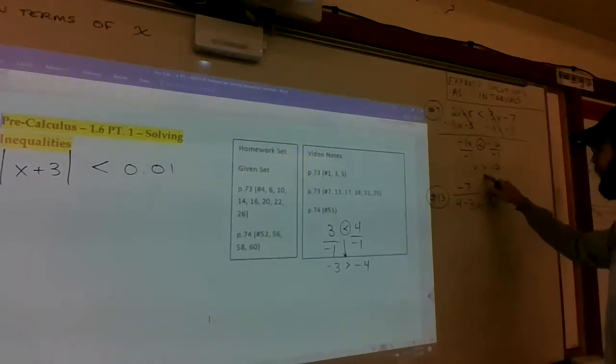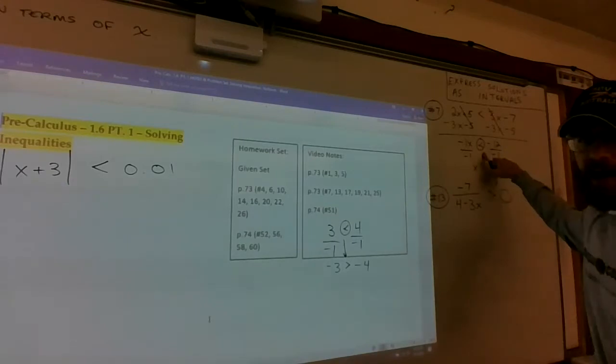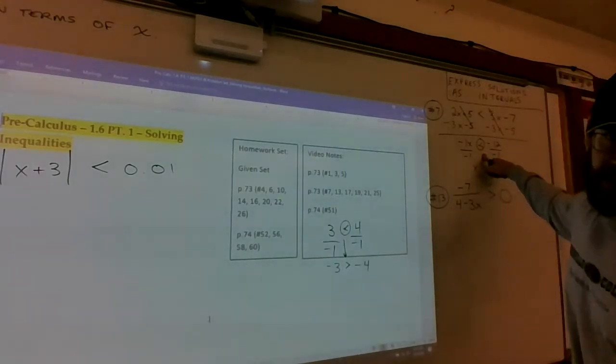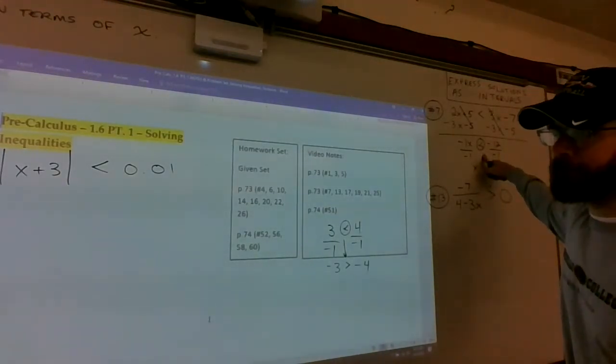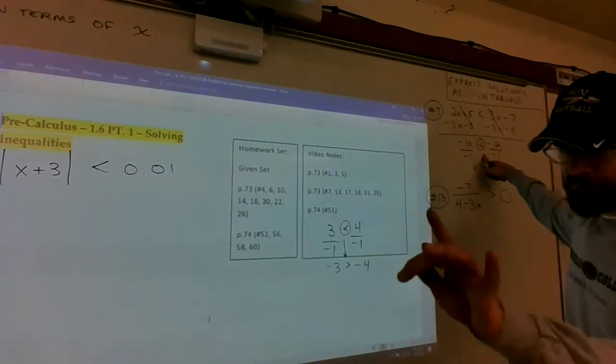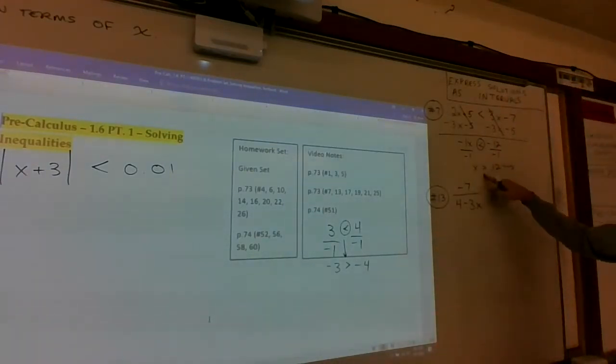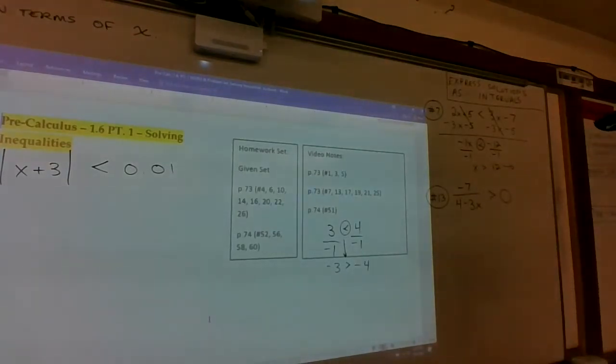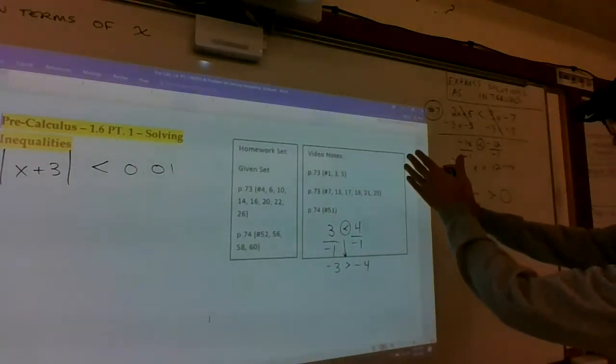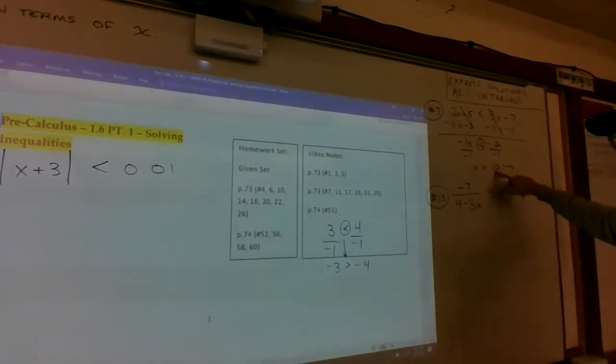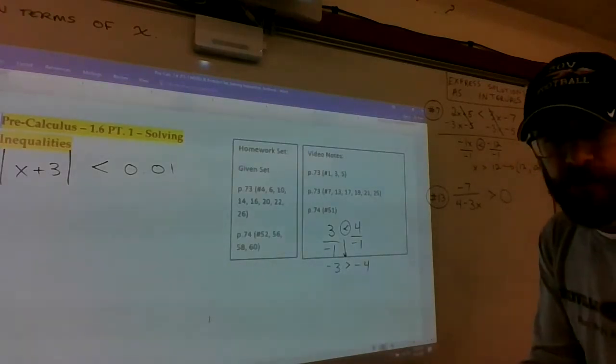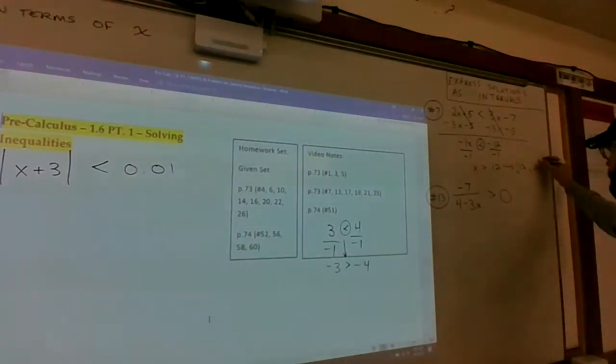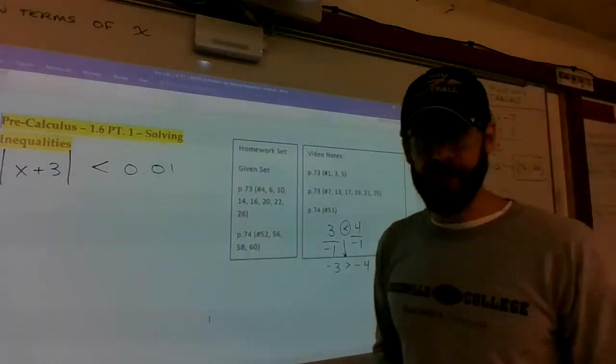So it's x is greater than 12. Put this in interval notation. You'd say okay, we start almost at 12. Seems like we're starting at 12.0000001, so it's a parenthesis on the 12 for the greater than. And then we're going to infinity. There's no real end value, so you can't put a bracket on infinity. That's our solution.